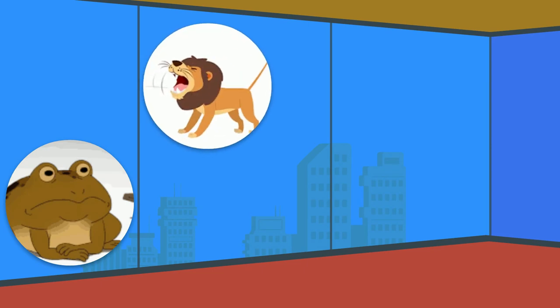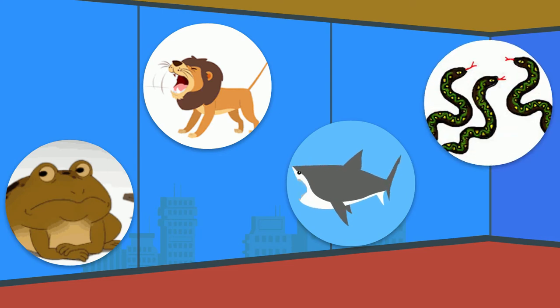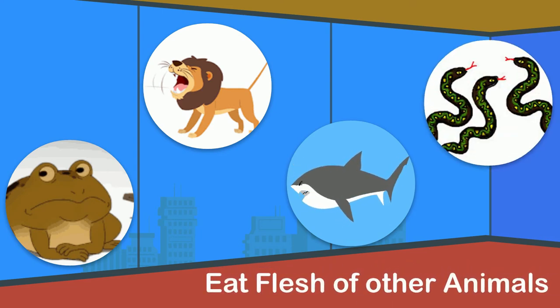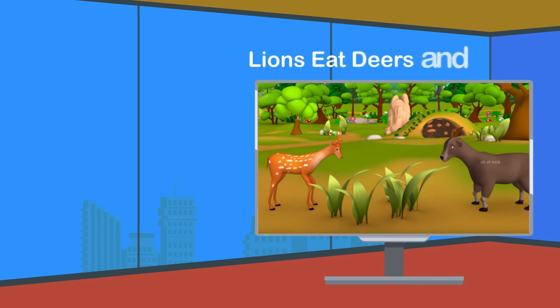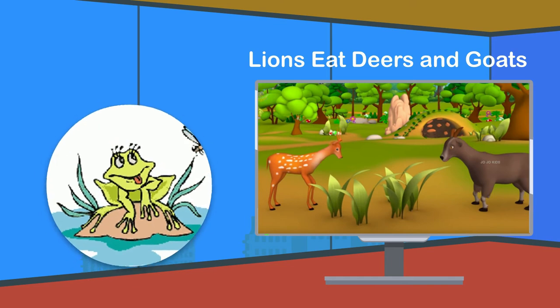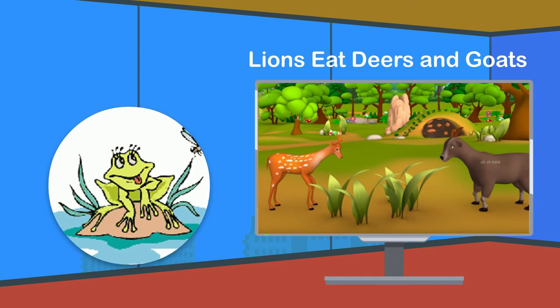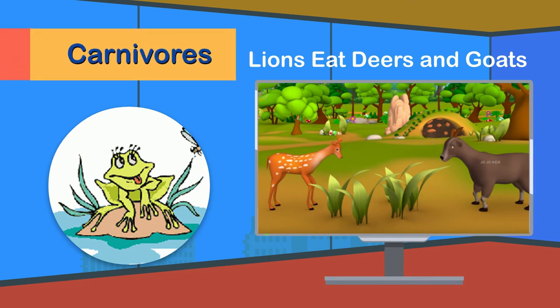Some animals such as toads, lions, sharks, and snakes eat flesh of other animals. For example, lions eat deer and goats, and toads eat insects. All meat-eating animals are known as carnivores.